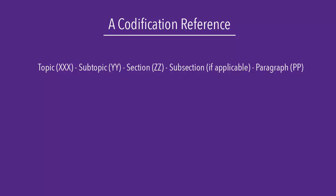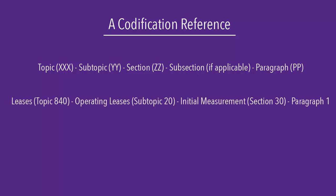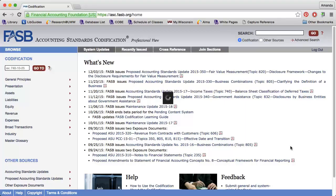So if we were looking at the codification for leases, operating leases, initial measurement, paragraph 1, our final reference would say ASC — for Accounting Standards Codification — 840-20-30-1. There are several ways to search the codification.